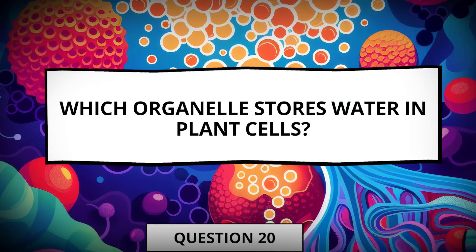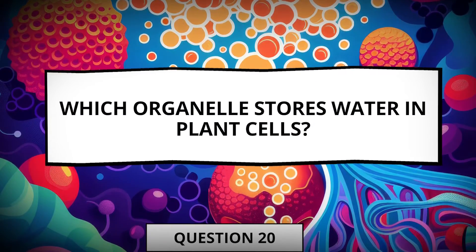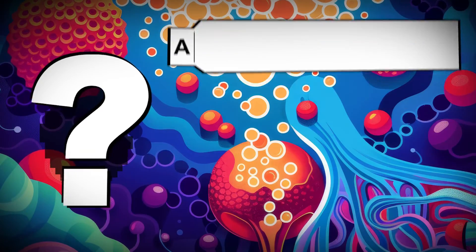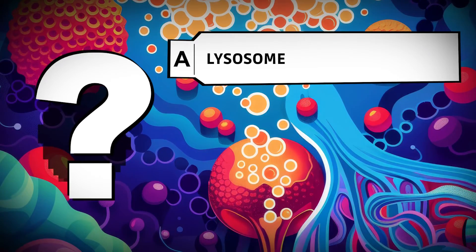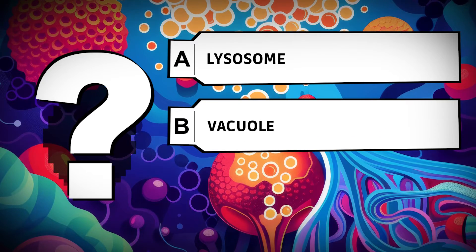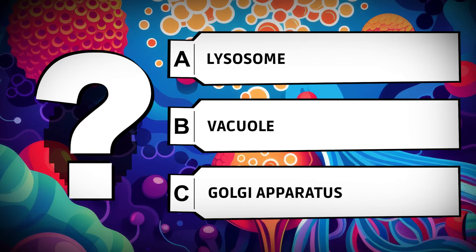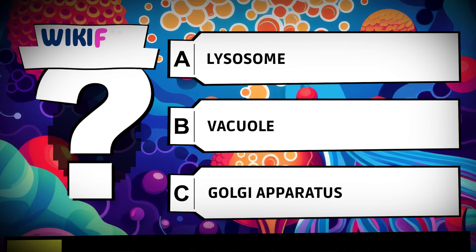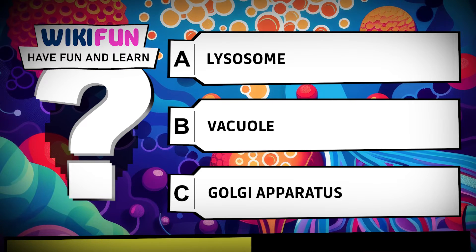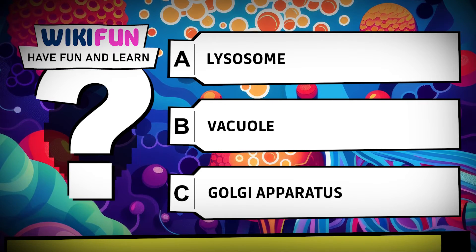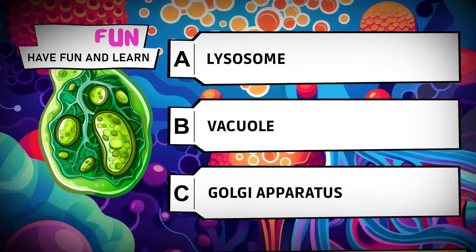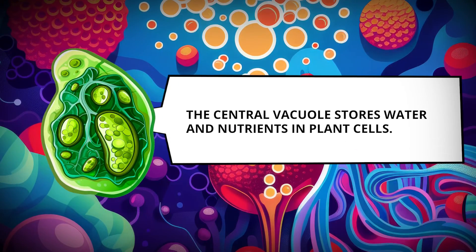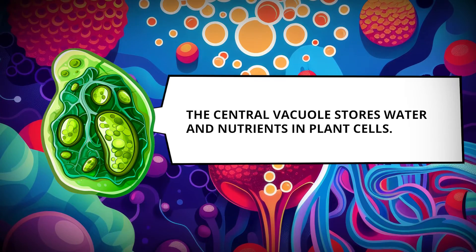Which organelle stores water in plant cells? Lysosome, vacuole, Golgi apparatus. The central vacuole stores water and nutrients in plant cells.